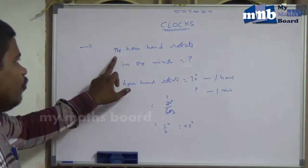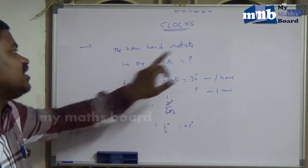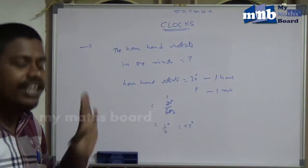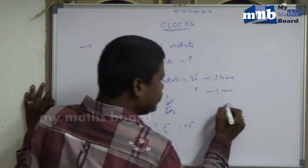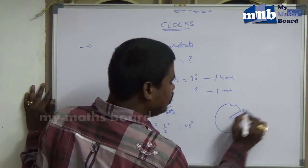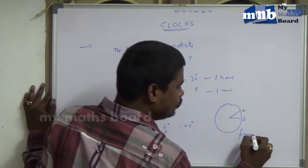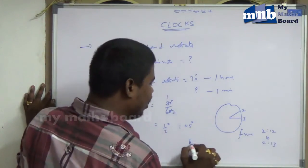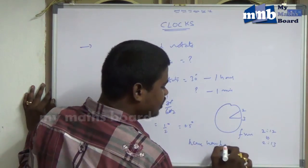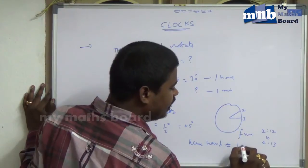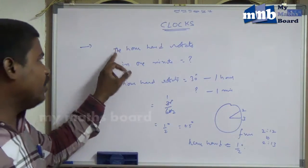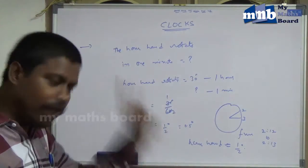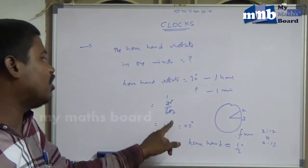That means in one hour, the hour hand rotates 30 degrees. At the same time, in one minute, the hour hand rotates half a degree. For example, from 12 to 2, the hour hand rotates half a degree per minute.